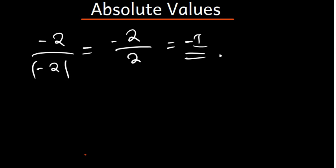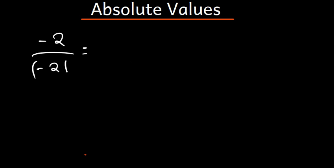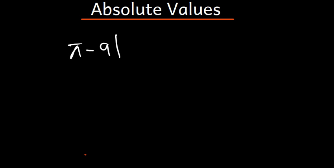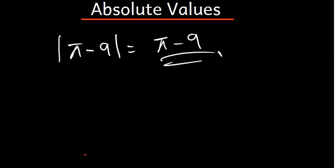We have another question: the modulus of π minus 9. Since we're not using a calculator, and π is approximately 3.14, which is less than 9, this comes out as 9 minus π. In general, whatever is inside the modulus comes out as positive — even if it's negative inside, it comes out positive. That is what we need to know about absolute values.